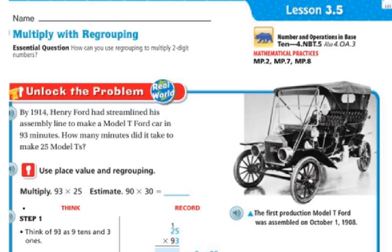How can you use regrouping to multiply two-digit numbers? So let's unlock the problem. By 1914, Henry Ford had streamlined his assembly line to make a Model T Ford car in 93 minutes. How many minutes did it take to make 25 Model Ts?